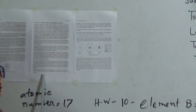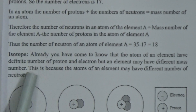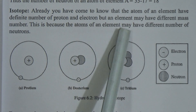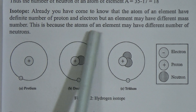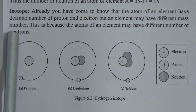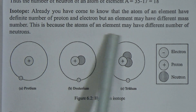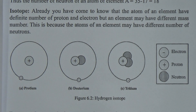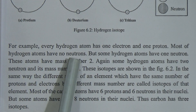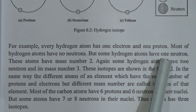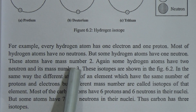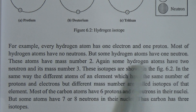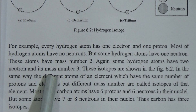We have found the number of protons and neutrons of that atom. Now let's come to the next topic: isotopes. We have learnt that the atoms of an element have a definite number of protons and electrons, but an element may have different mass numbers. This is because atoms of an element may have different numbers of neutrons. For example, every hydrogen atom has one electron and one proton. Most hydrogen atoms have no neutrons, but some hydrogen atoms have one neutron and have mass number two.